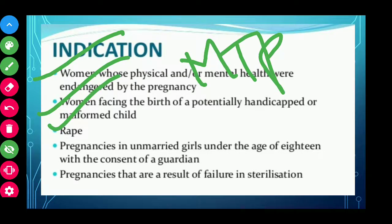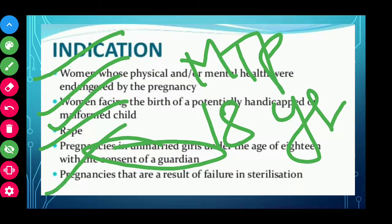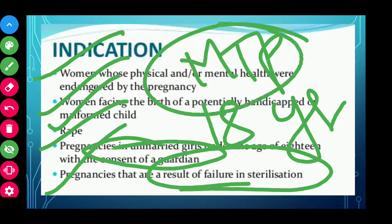Additional indications include: rape — a girl who has been raped and pregnancy resulted from the rape can be terminated under this act. Pregnancies in unmarried girls under the age of 18 years — that pregnancy should also be terminated, but there should be consent of a guardian. And pregnancies that are a result of failure in sterilization — if there was some temporary family planning and it failed, they can go for MTP. These are the indications.